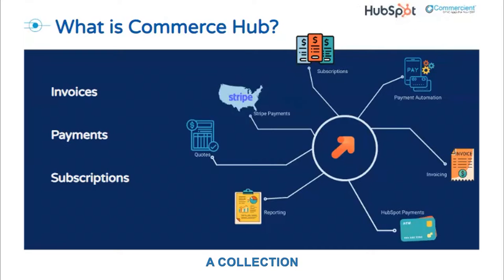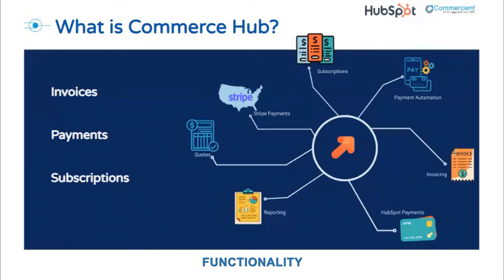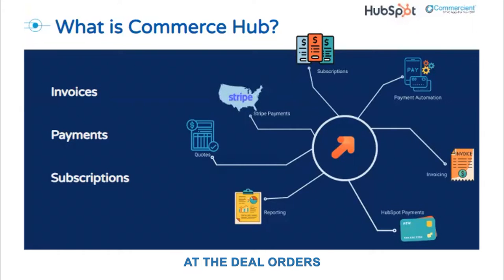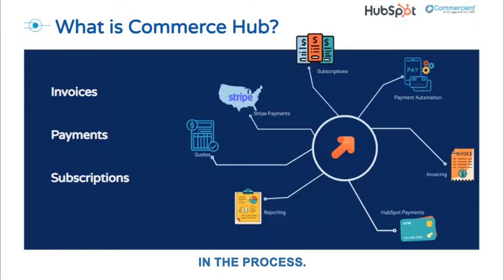Commerce Hub is a collection of three objects in HubSpot that allow you to streamline your deal-to-revenue process. Essentially, it allows you to handle some — not all — but some accounting-style functionality directly in HubSpot. When a deal is closed and won, traditionally you would get the deal orders to an accounting system, then create the invoice and accept payment in that separate system. Unless you're using an integration, this could cause significant delays and inefficiencies in the process.